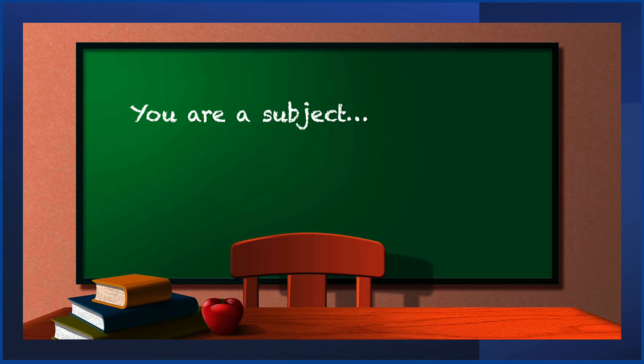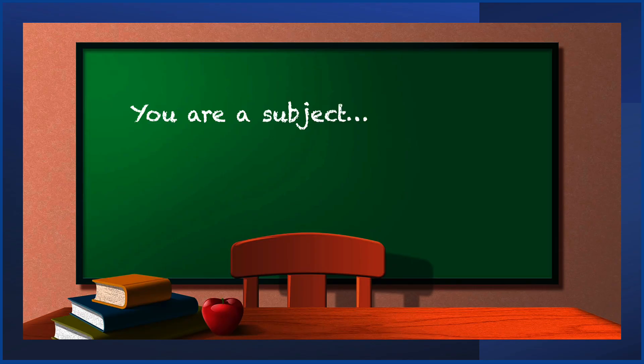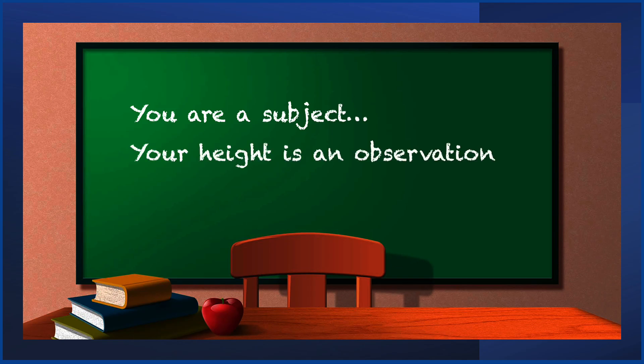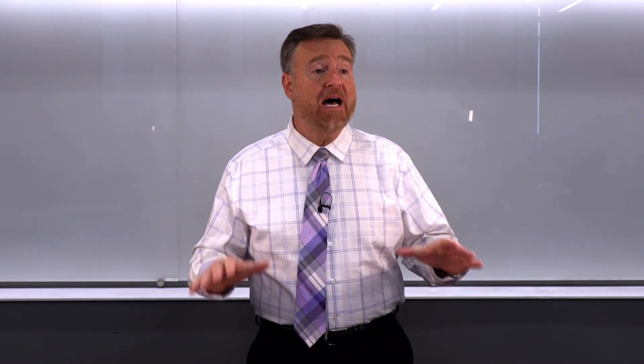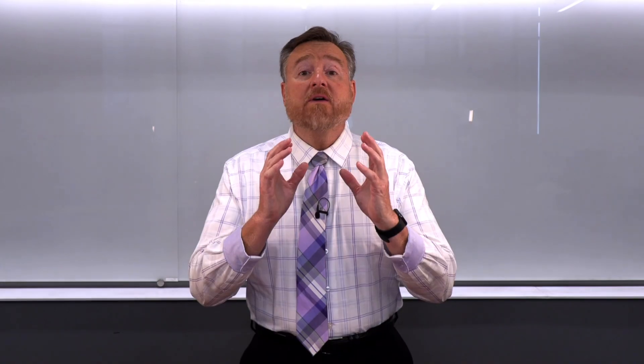Let's apply what we've learned to the classroom example. Who would be a subject? You — more accurately a participant, because you are a human subject. What might be an observation? Your height could be an observation. And our sample size for this experiment would be 24. We could collect data on a variety of variables.